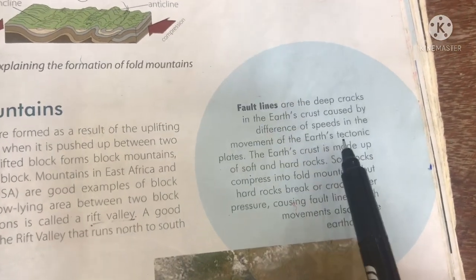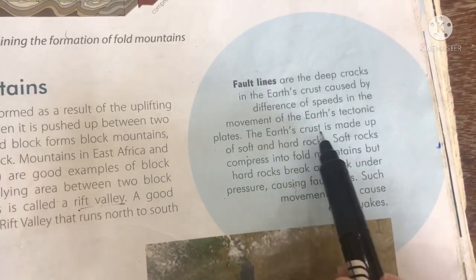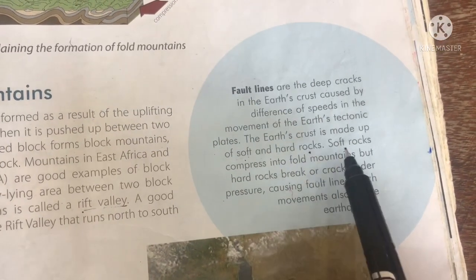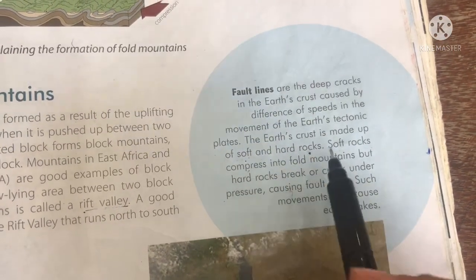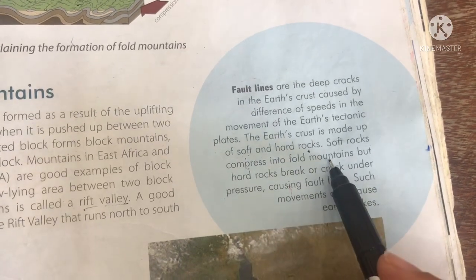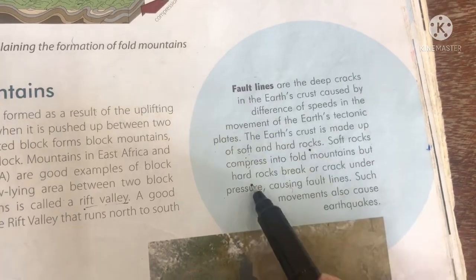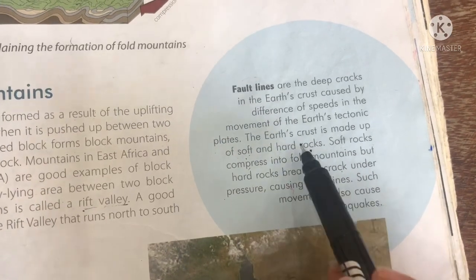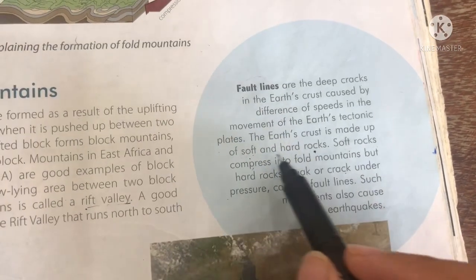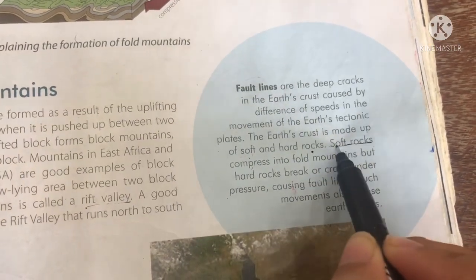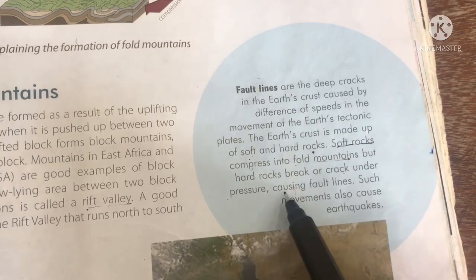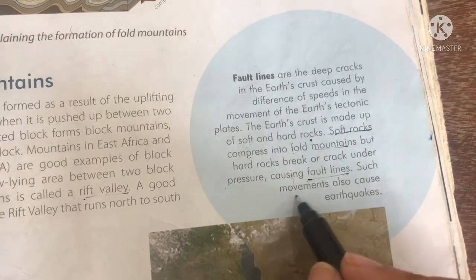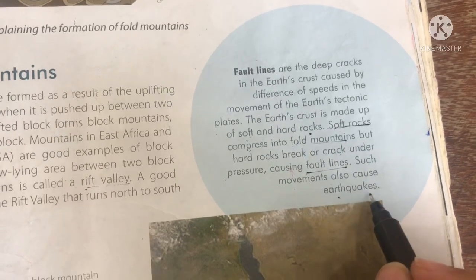The earth's crust is made up of soft and hard rocks. Soft rocks compress into fold mountains, but hard rocks break or crack under pressure, causing fault lines. Such movements also cause earthquakes.